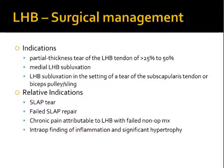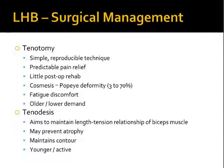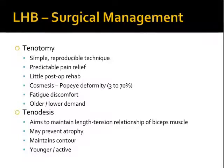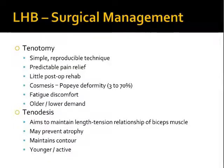The two main surgical treatments for long head biceps problems are tenotomy or tenodesis. Tenotomy is relatively simple and can provide predictable pain relief, but can cause cosmetic problems with a Popeye deformity. In the literature, several studies have looked at the incidence of this after tenotomy, and the incidence varies quite a lot between studies — ranging from three to seventy percent. Patients who undergo tenotomy often have fatigue discomfort, describing a cramping pain in their biceps after continued heavy lifting. This is a good treatment for older or lower-demand patients.